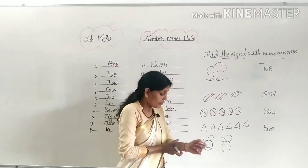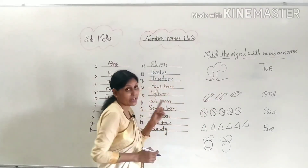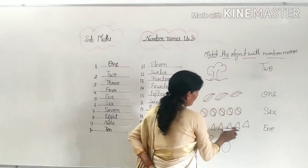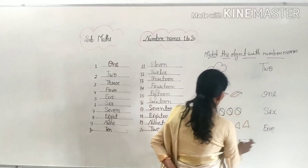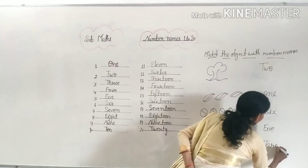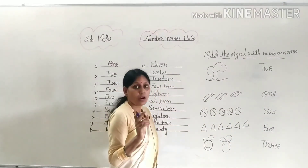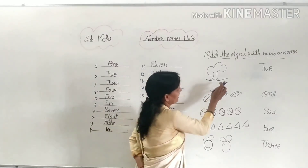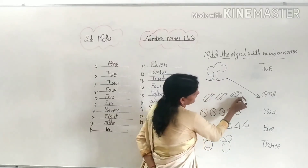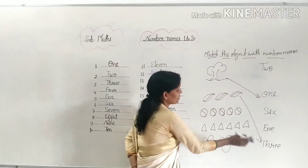Match the object with the number names — you may have also studied this in LKG. But it will be easy only when you have learned the spellings. Here I have shown a few spellings; you need to learn all spellings from 1 to 100. So: 1 tree — match 1 tree with ONE. 3 leaves — match 3 with THREE. Because I could match them because I know the spellings. Like that, match 5 with FIVE, and 6 with SIX.